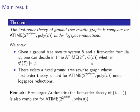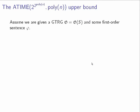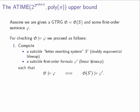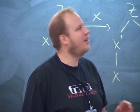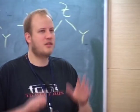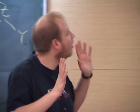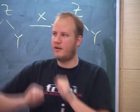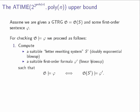Let me talk about the upper bound. Assume we have a ground tree rewrite system and a formula phi. We call the induced graph G, and assume phi is a first-order sentence. We solve the model checking problem in two steps. In the first step we compute a letter rewriting system — I'll explain this in a minute — and the size of the resulting letter rewrite system is doubly exponential in the original input size. We modify the input first-order formula to a formula phi', such that the original graph satisfies the formula if and only if the computed letter rewrite system satisfies phi'.